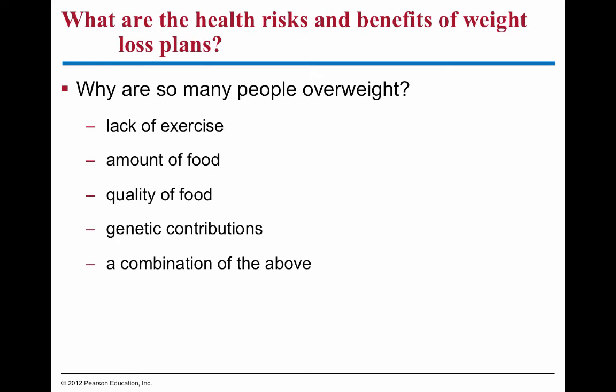Out-of-balance nutrition can result in too much or too little weight. Overweight can result from lack of exercise, too large food portions, eating poor quality food high in salts, calories, and fats but lacking real nutrients, and genetic factors. Underweight can similarly result from too much exercise, too little food, poor food quality lacking nutrients, and genetic contributions.